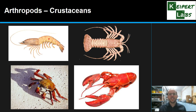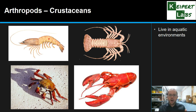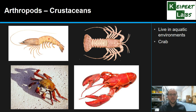Then we come across crustaceans. Crustaceans are arthropods that live in aquatic environments — they might be underwater, in creek areas, fully water-based, or able to go on land as well. We're talking about things like crabs, lobsters, prawns, yabbies, and Balmain bugs. All those sorts of things are examples of crustaceans.